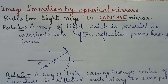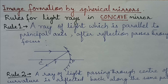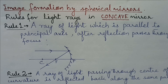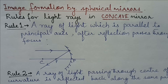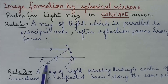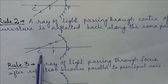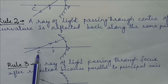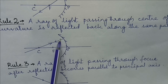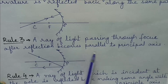Now let us discuss about image formation by spherical mirror. There are certain rules for light rays to form image in concave and convex mirror. As the rules are different for concave and convex mirror we will discuss them separately. Let us deal with concave mirror first. Rule 1: A ray of light which is parallel to principal axis after reflection passes through focus. Rule 2: A ray of light passing through center of curvature is reflected back along the same path, as the light ray meets the surface normally. Rule 3: A ray of light passing through focus after reflection becomes parallel to principal axis.